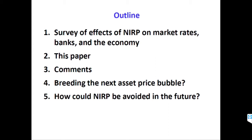I end with two questions that go well beyond the paper. The first question is: is NIRP breeding the next asset price bubble? The second question is: how could NIRP be avoided in the future? NIRP is certainly not the best of all circumstances in which to conduct monetary policy, so are there things that could be done to reduce the likelihood of future NIRP episodes?